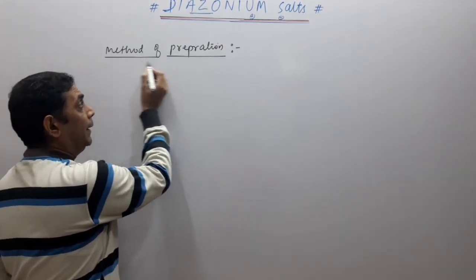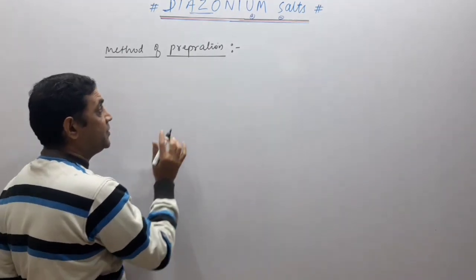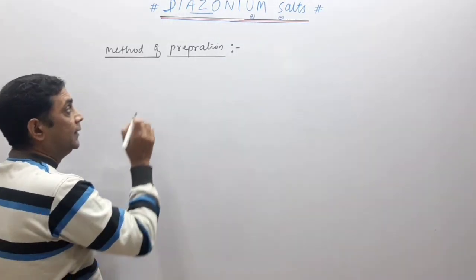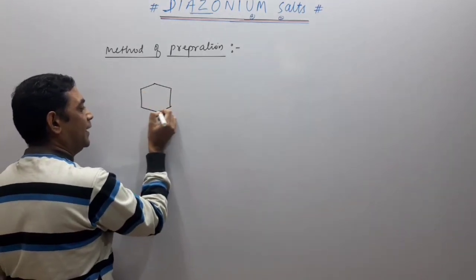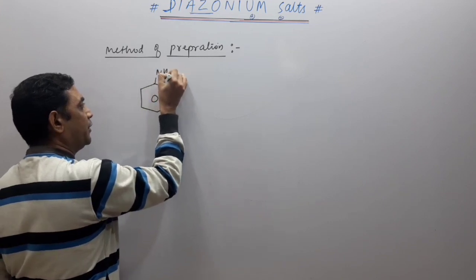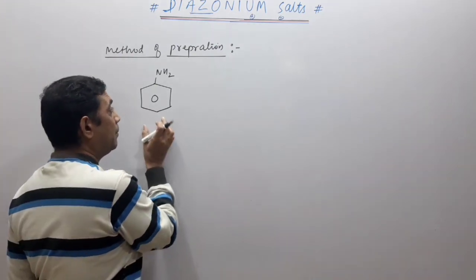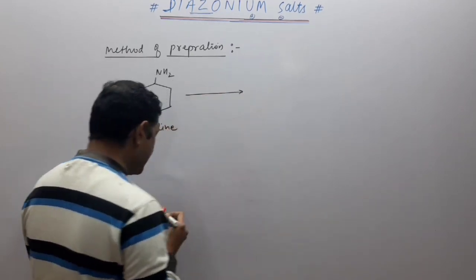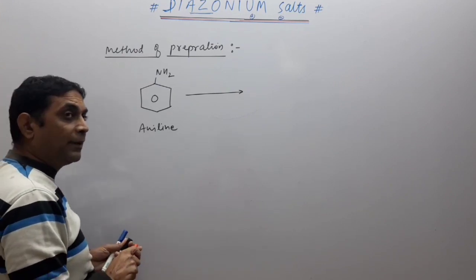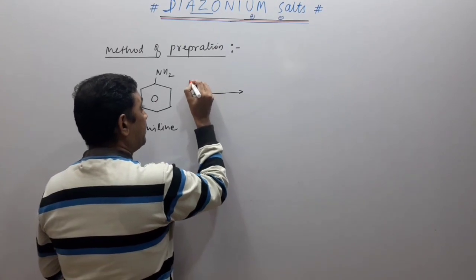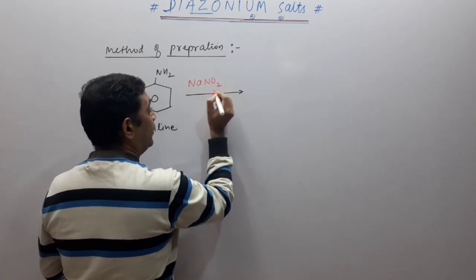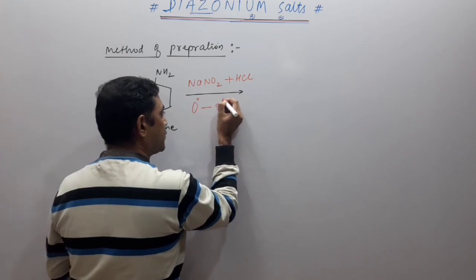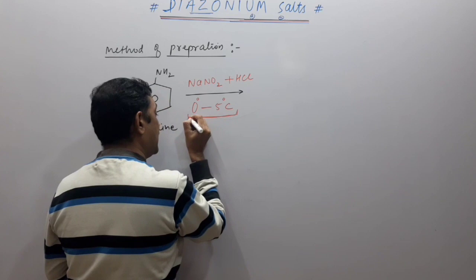Next, students — method of preparation of diazonium salts. For aromatic diazonium salt, the reactant is aniline (benzeneamine). The reagents are NaNO2 (sodium nitrite) and hydrochloric acid. The most important identification is the temperature — the highlight temperature in all of organic chemistry: 0 to 5 degrees Celsius (273 to 278 Kelvin).